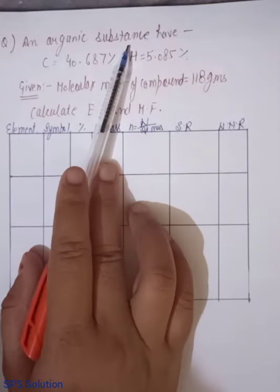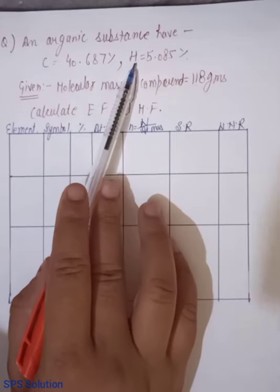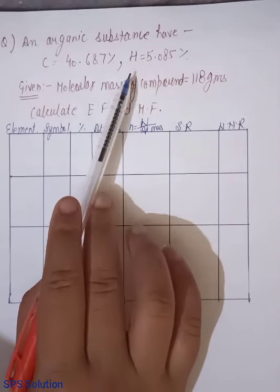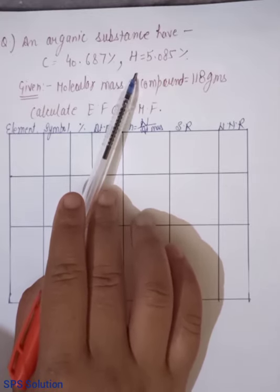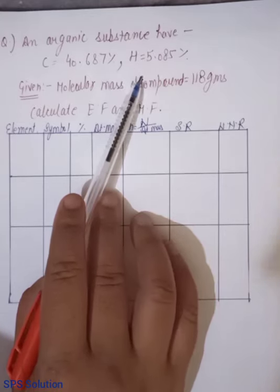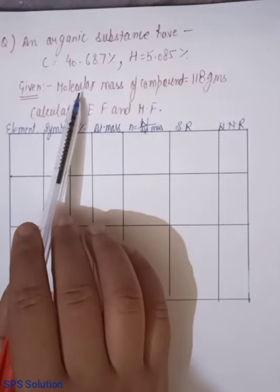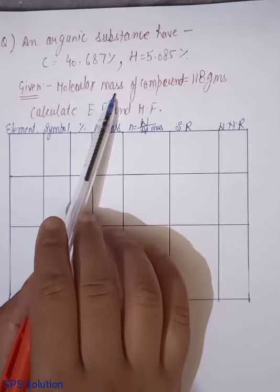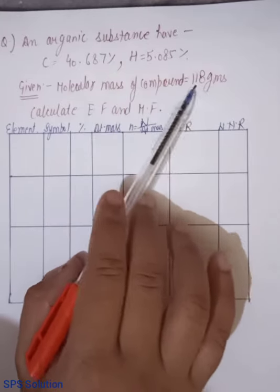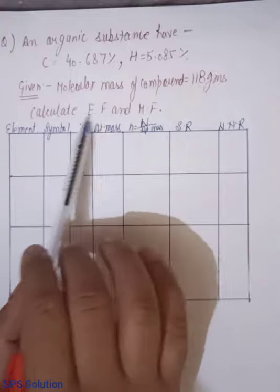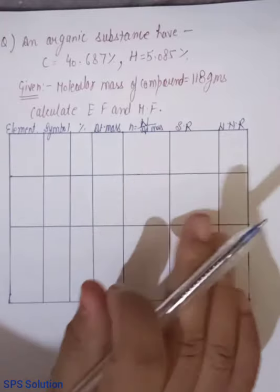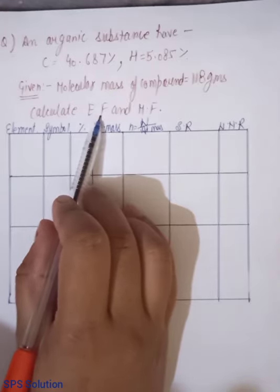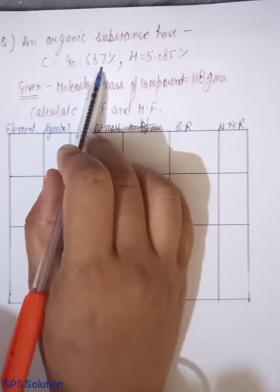An organic substance have carbon hydrogen. Okay. So, let's start it. Look, information, how much information is here? How much we have to check? We have to check all information.